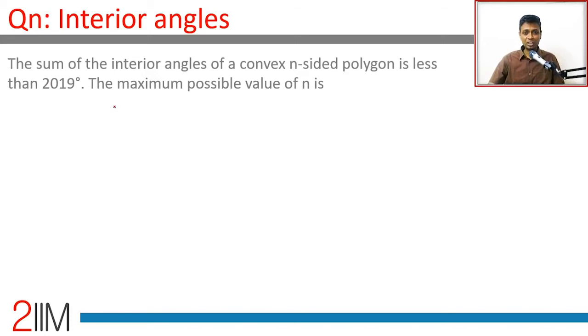The sum of interior angles of a convex n-sided polygon is less than 2019 degrees. For an n-sided polygon, the sum of interior angles is (n-2) × 180 degrees and the sum of exterior angles is 360 degrees.